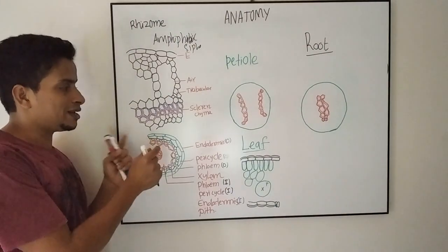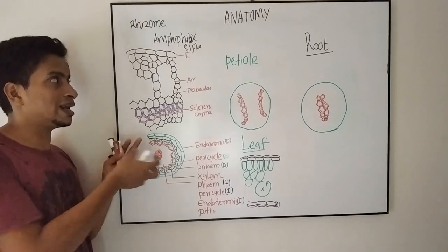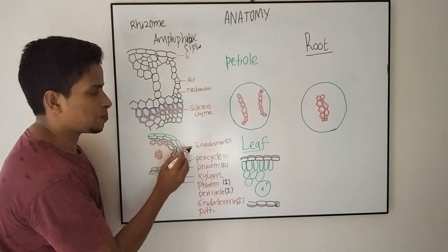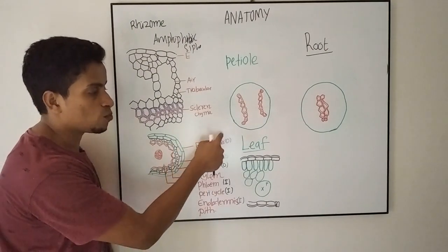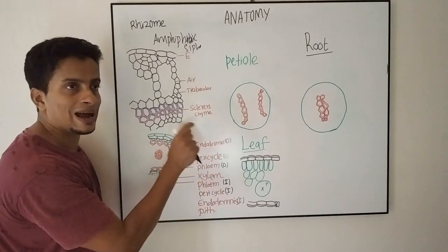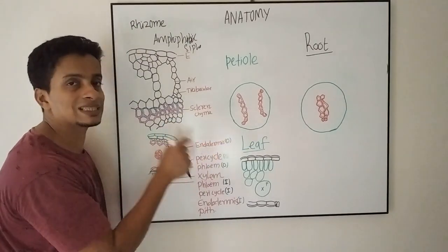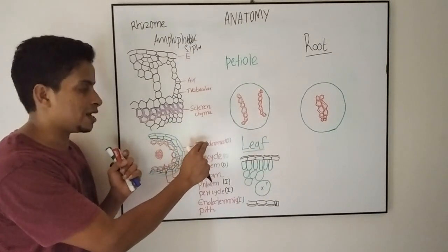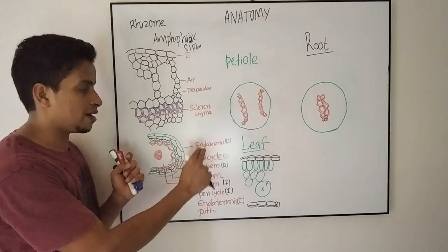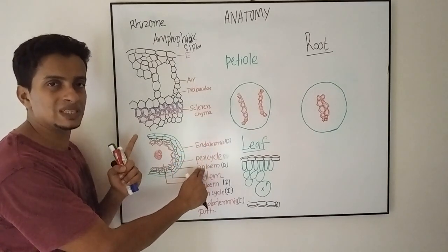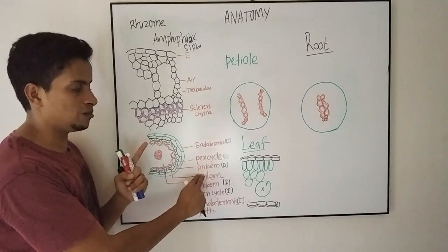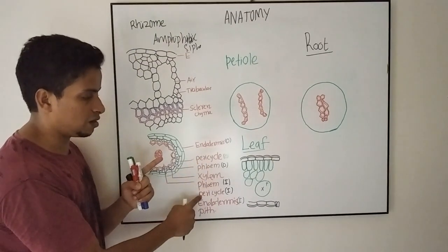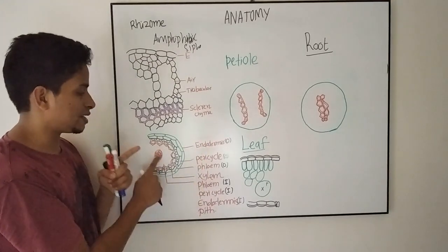Now let us look at how amphifloic siphonostele is organized in the rhizome of Marsilea. This represents the outer endodermis, followed by outer pericycle, followed by outer phloem. The xylem siphon is single. Then comes the inner phloem, inner pericycle, and inner endodermis.